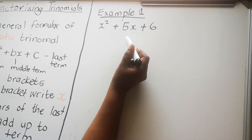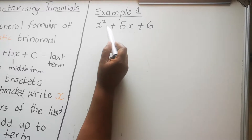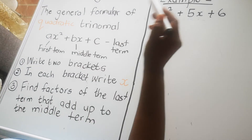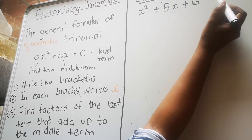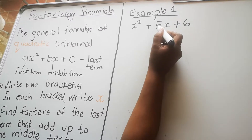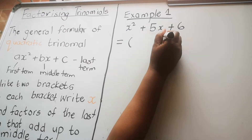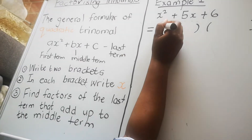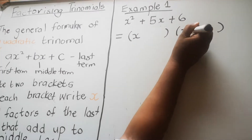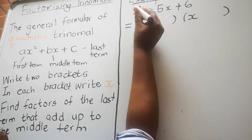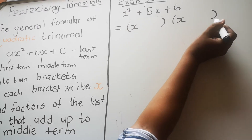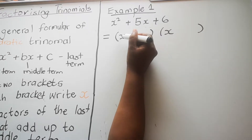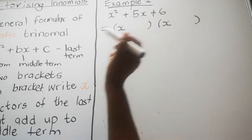Example one is x squared plus 5x plus 6. Step one: since this is an expression — not an equation — we write equals, then two brackets. Step two: in each bracket write an x, so we have (x )(x ). When you multiply x times x you get x squared, which accounts for the first term.